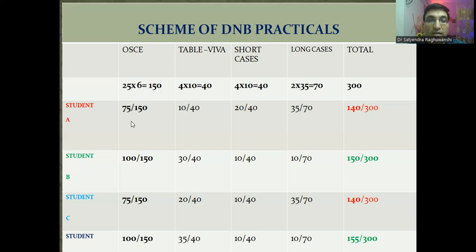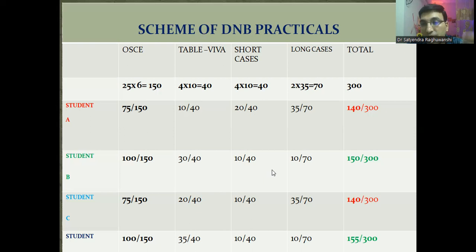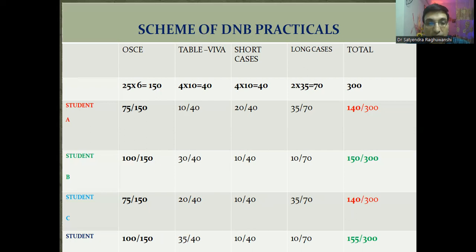One candidate barely getting 50% in OSCE, performing very poorly in table viva, and just getting 50% in short and long cases still cannot pass because of his poor table viva performance. Another candidate doing really well in OSCE and table viva has 130 marks from those two sections alone — even with minimal marks in long and short cases, he will sail through. Another scenario: good OSCE and table viva performance simply makes him pass despite average long case and short case scores.